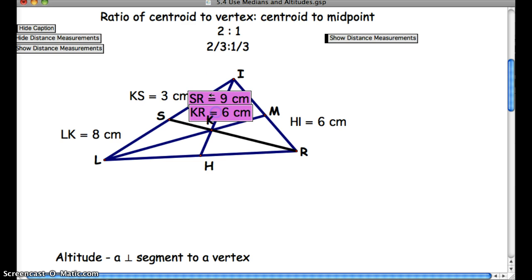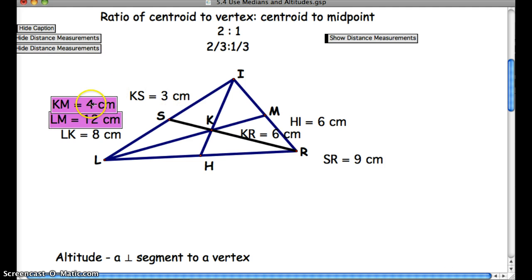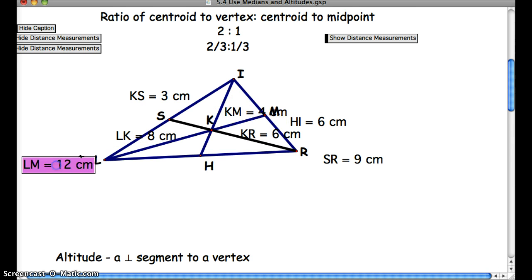So we said KR was six, and the whole segment, SR, is nine, right? Three plus six is nine. Over here, we said KM was four, LK was eight, and the whole segment, LM, is 12.